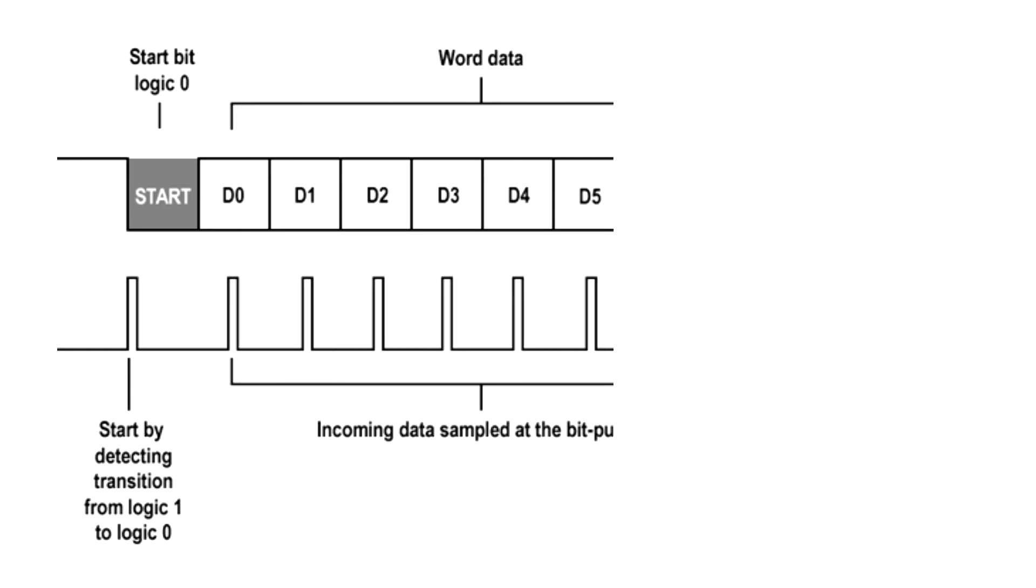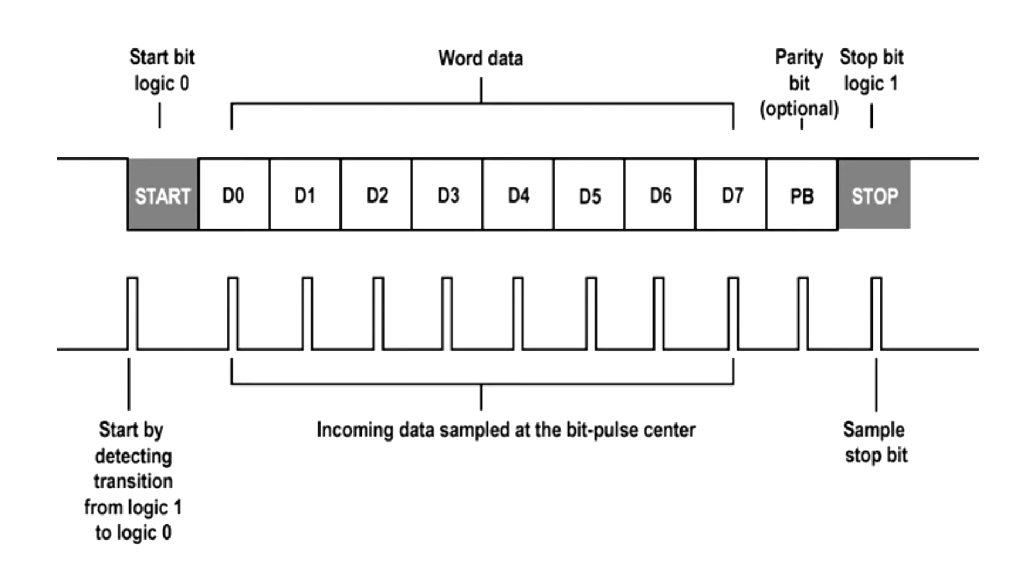The algorithm works as follows. First a start bit is sent over the data line. Afterward the data is sent followed by an optional parity bit and a stop bit. Here it is important that the clocks of both modules are synchronized since there is no clock signal between the modules.